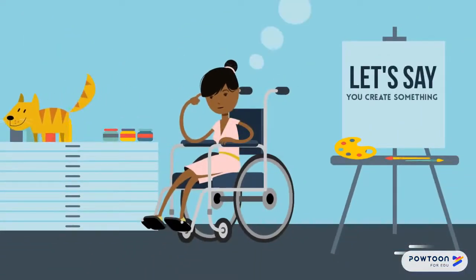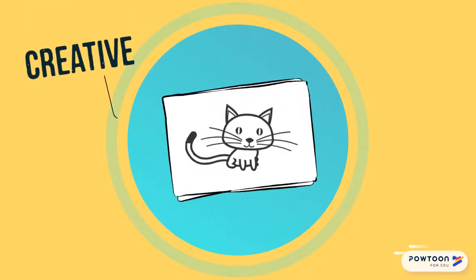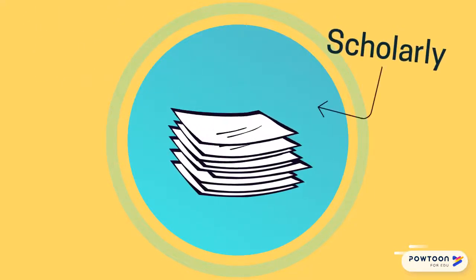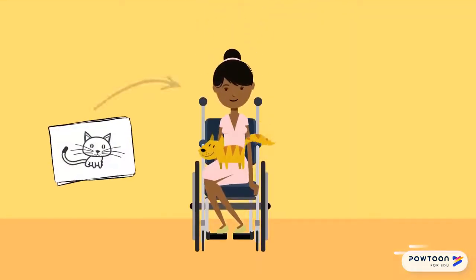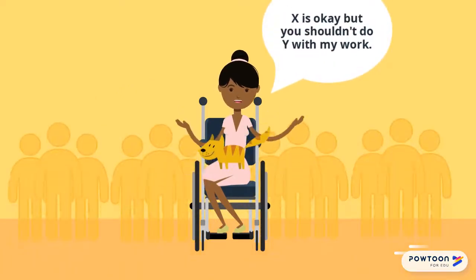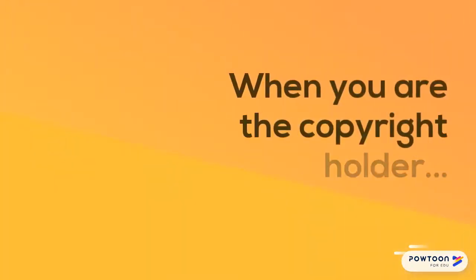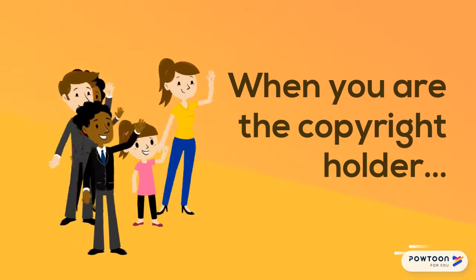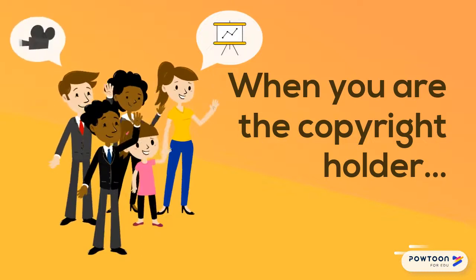Let's say you create something. This thing could be creative, like a picture of your cat, or scholarly, like an essay about cats. Because you are the creator of this picture or essay, copyright allows you to decide what people can do with your creation. When you are the copyright holder, people have to ask you for permission before putting your cat picture into a PowerPoint or adapting your cat essay into a movie.